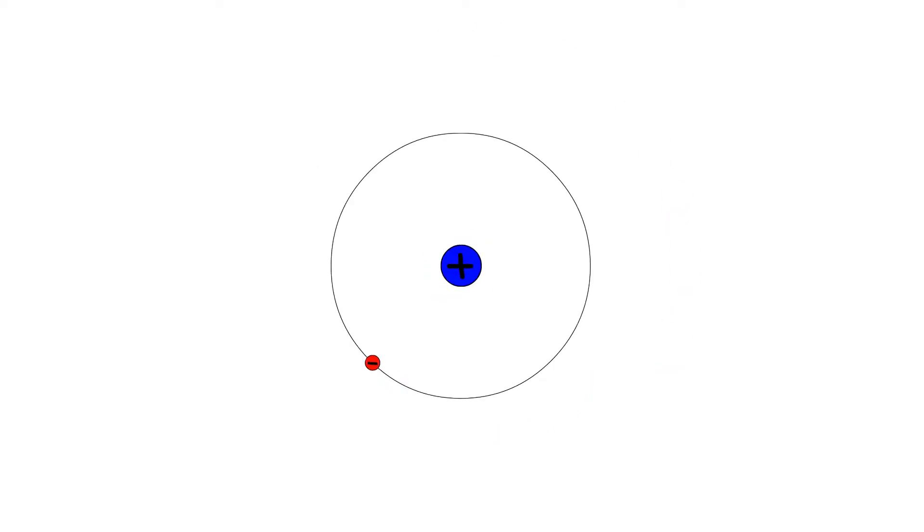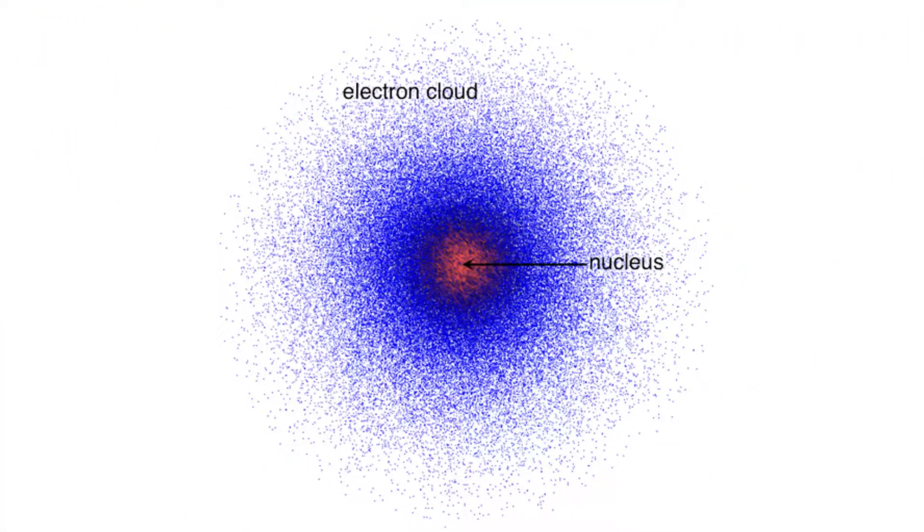Well, before I give you an accurate answer, we have to fix our information. This is not what an atom looks like. Here's a more accurate model — the quantum mechanical model of the atom. This one's hydrogen.